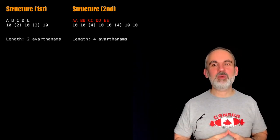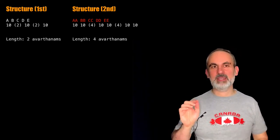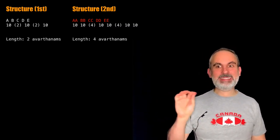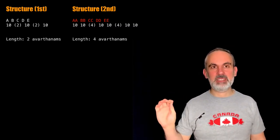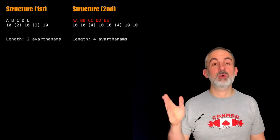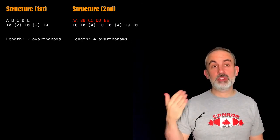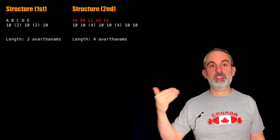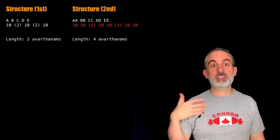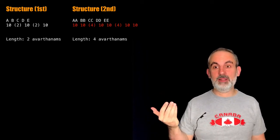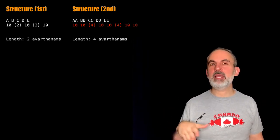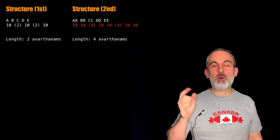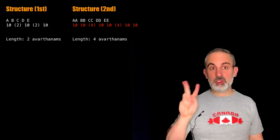And what do we have today? Today we look at the first line. The purvangam is A, A, B, B, C, C, D, D, E, E. So it's clear what's going on: we are duplicating the phrases that we recited in yesterday's korvai. And what's going on in the uttarangam part? Well, exactly the same — we are duplicating, but in a different way, because now 1 ten has become 2 tens.